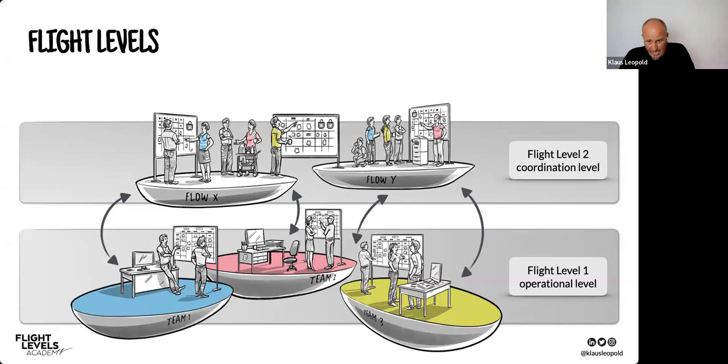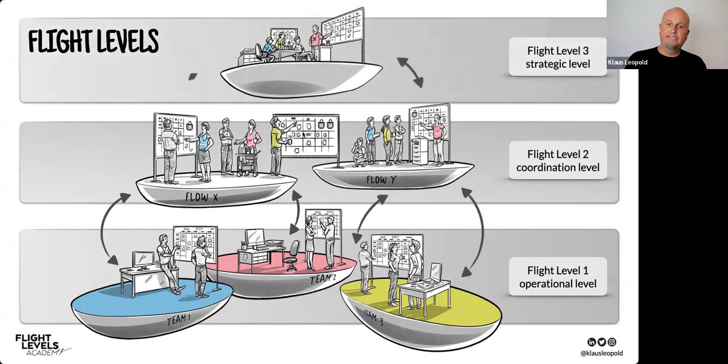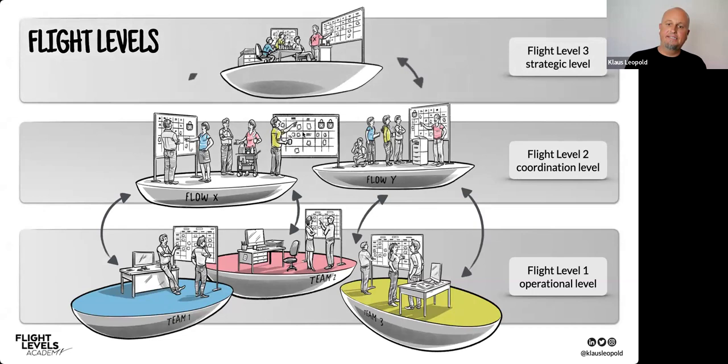Then hopefully there's the question: are we heading in the right direction? Where are we actually flying to? This is answered on Flight Level Three. FL3 is the strategic level — here we align the work in the organization to the strategy and make strategy happen. Those are the three Flight Levels.